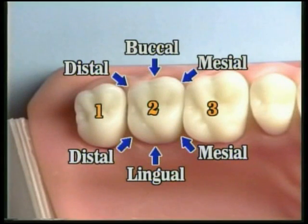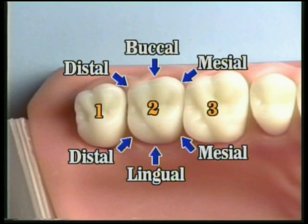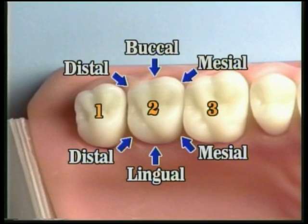If this is tooth number 2, the six points that we would measure are the distal, buccal, and mesial on the buccal side of the tooth, and the mesial, lingual, and distal on the lingual side.